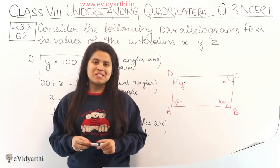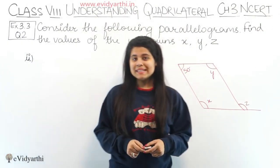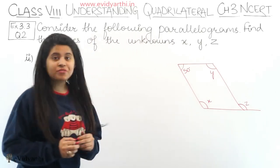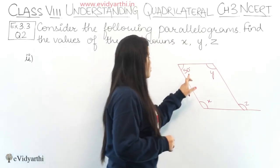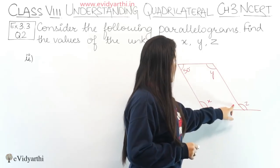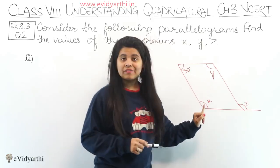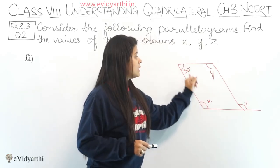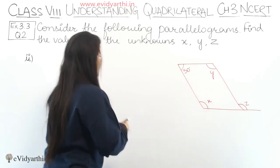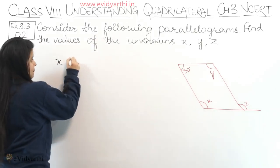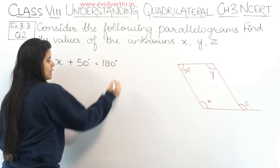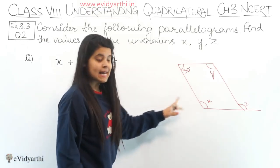Now let's come to the second part. Again, you have to find the value of x, y, and z. Here, we can find x using the property that adjacent angles are supplementary. So x + 50° = 180°. The reason: adjacent angles are supplementary.